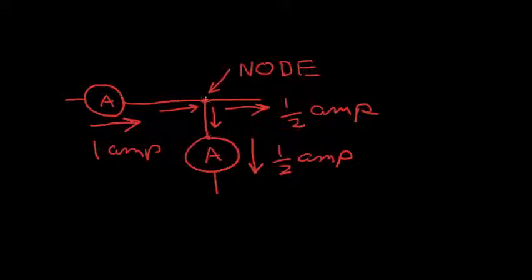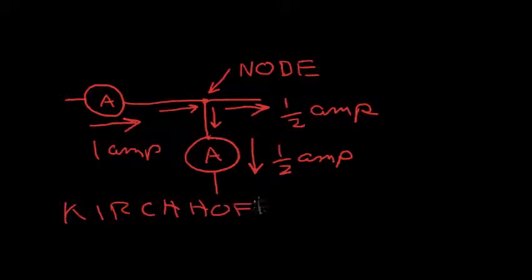So, to summarize, there's a rule about the current flowing at a node. The current flowing into the node is equal to the current flowing out of the node. In this case, flowing to the right, we have one amp and flowing down a half amp and flowing in this other branch a half amp. Everything sums to zero. What goes into the node comes out of the node from conservation of charge. This is called Kirchoff's Current Law.